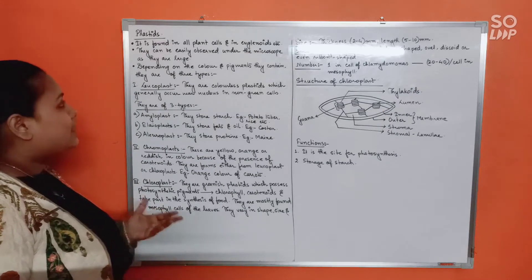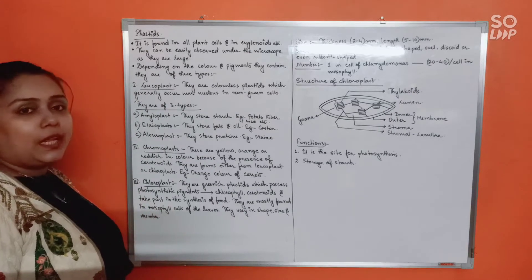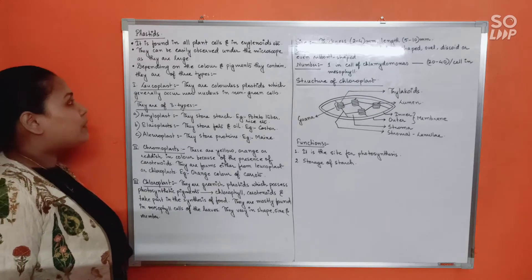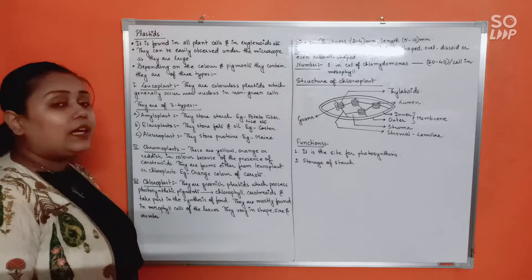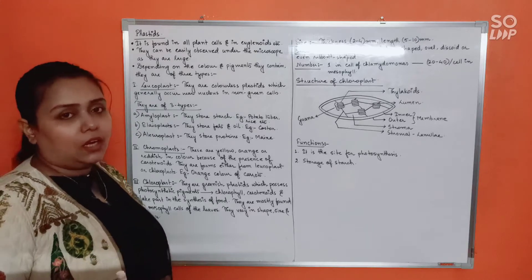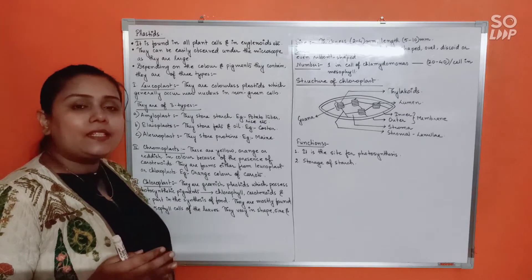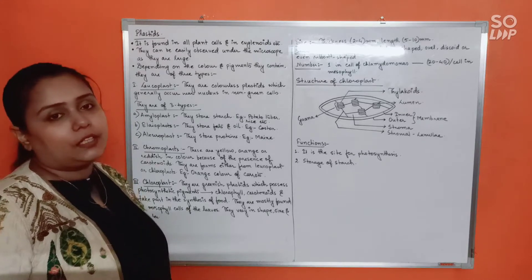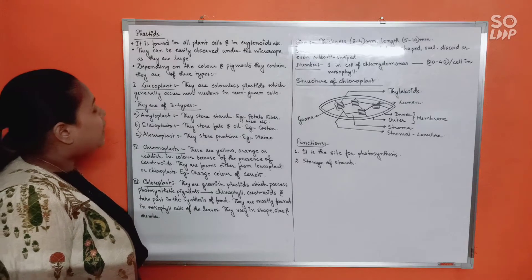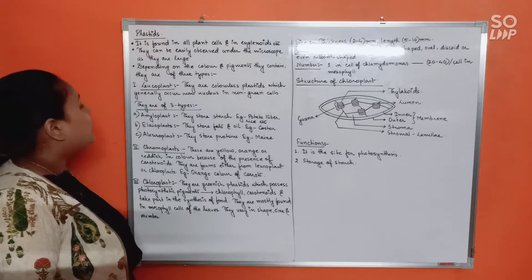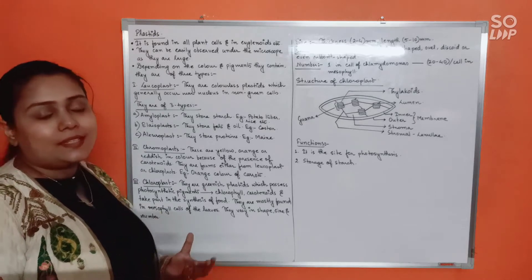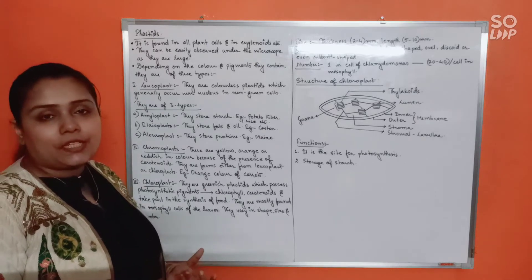Plastids are mostly found in all plant cells and euglenoids etc. They can be easily observed under the microscope as they are quite large. Depending on the color and pigments they possess, plastids can be of three types.